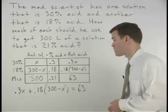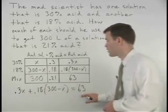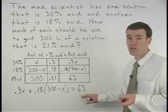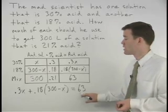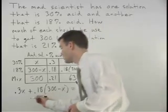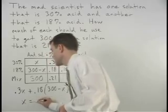Solving from here I would first multiply both sides of the equation by 100 to get rid of the decimals. And eventually we find that x equals 75.